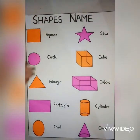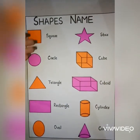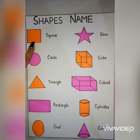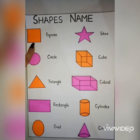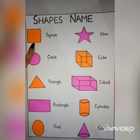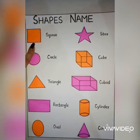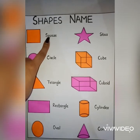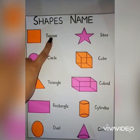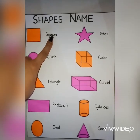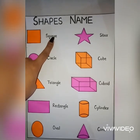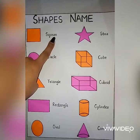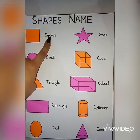So these are some shapes. The first one is square. This is a square. S-Q-U-A-R-E, square.